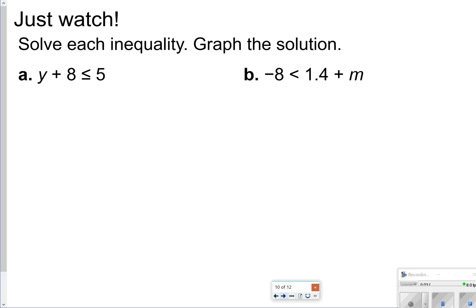So here are two examples, and again we're seeing addition here, so I'm going to be using subtraction to solve. So for letter A, I'm going to subtract 8 from both sides, so I'm going to get y is less than or equal to negative 3. So my number line, I'm going to have negative 4, negative 3, negative 2, a closed circle over the negative 3, and pointing left.